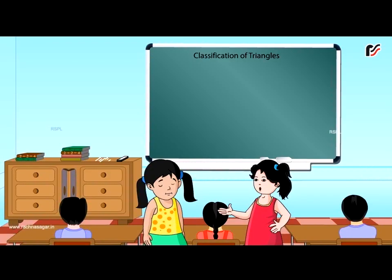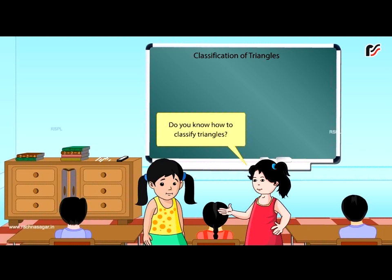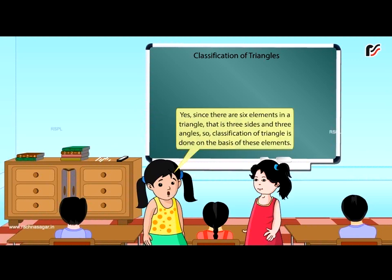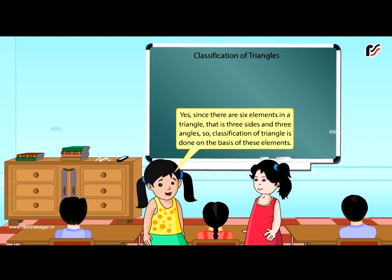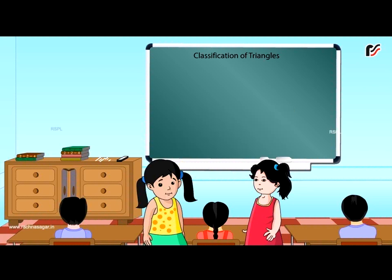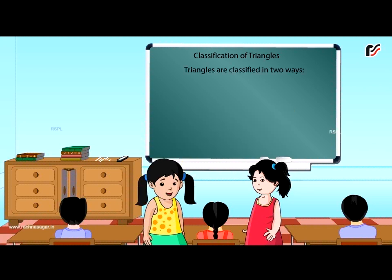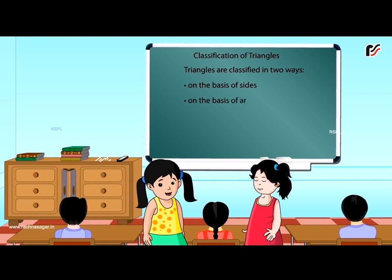Classification of triangles — do you know how to classify triangles? Since there are six elements in a triangle, that is three sides and three angles, classification of triangles is done on the basis of these elements. Triangles are classified in two ways: on the basis of sides, and on the basis of angles.